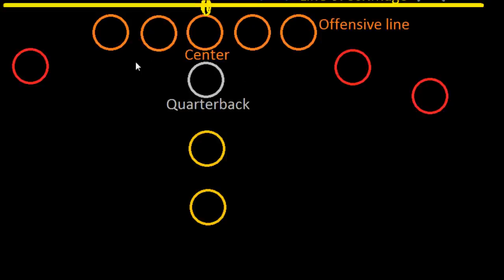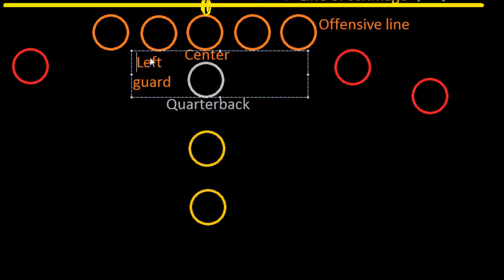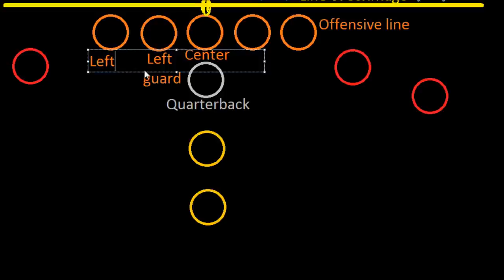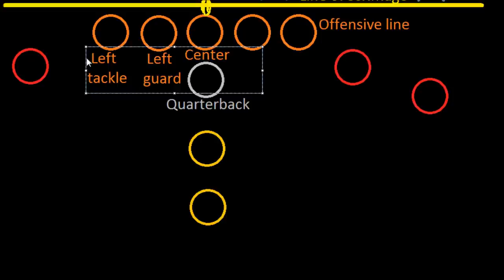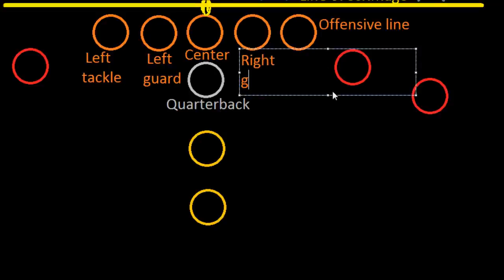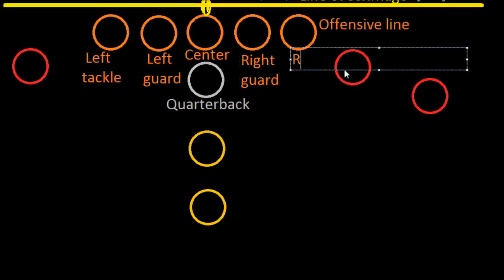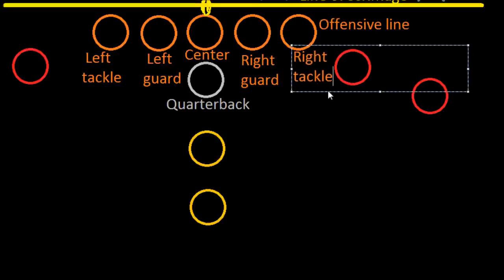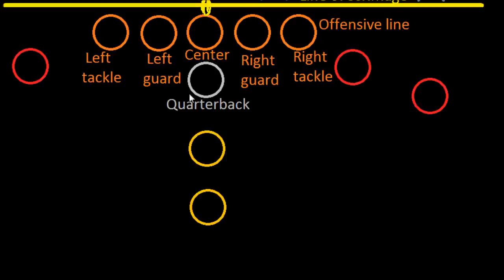On either side of the center we have the rest of the offensive line. On the left side we have the left guard, who stands right beside the center to his left, and then the left tackle. To the right of the center we have the right guard, and on the outside the right tackle. These offensive linemen's job is to prevent the defense from getting to the quarterback, who has the ball. They're usually big guys.